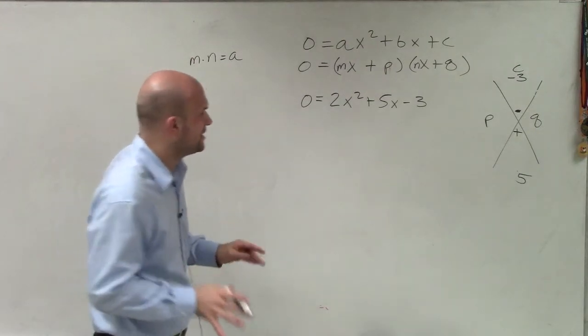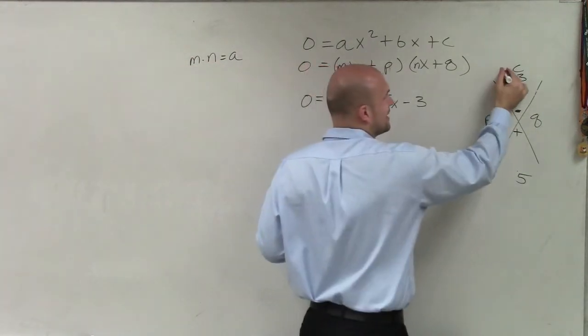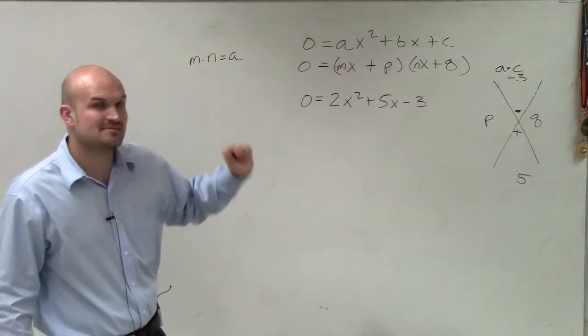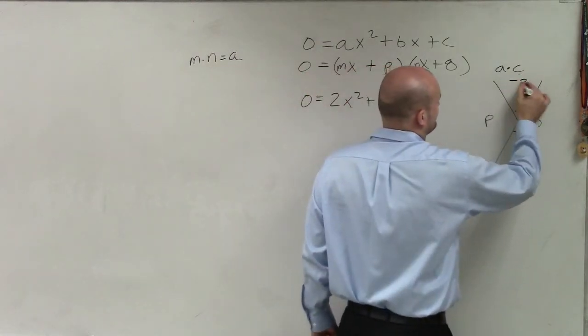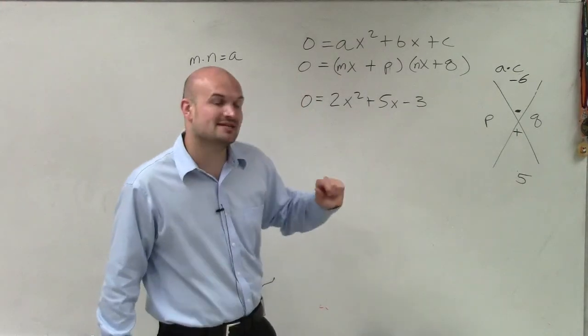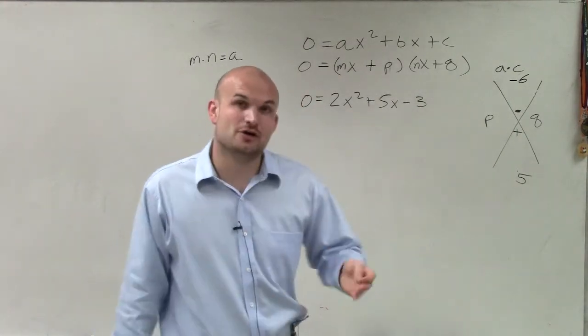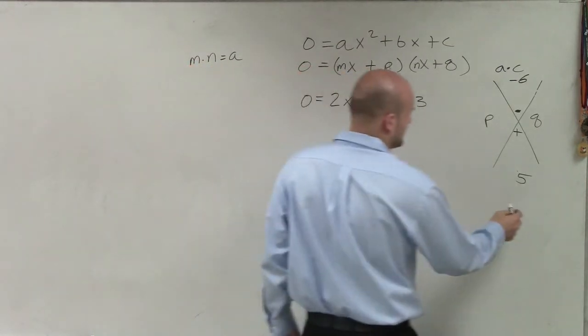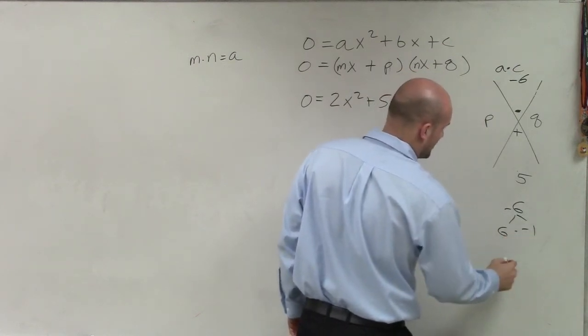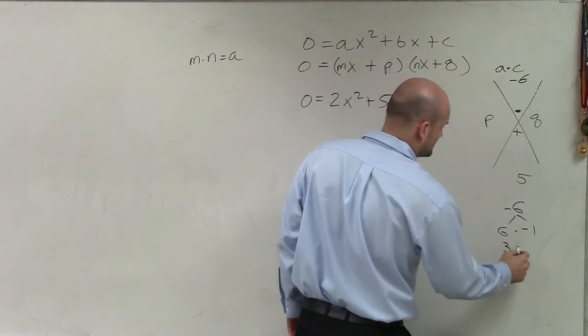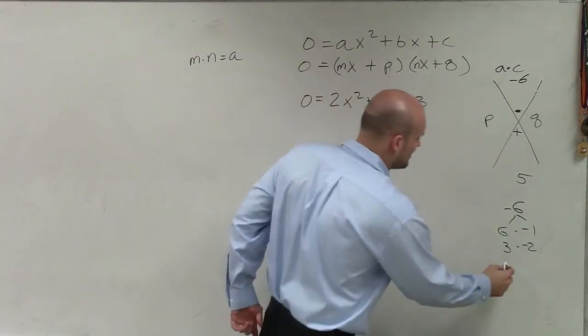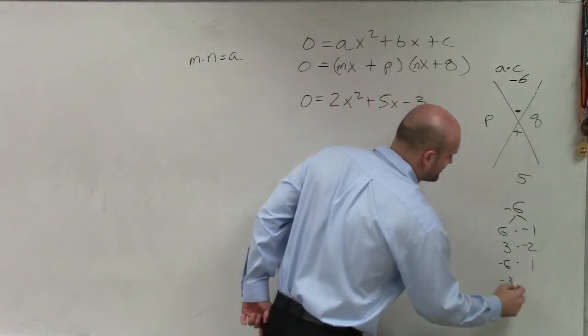So when we have this case, in this scenario, when factoring this, by using this method, I'm going to use a times c. So now what I want to do is I want to multiply 2 times negative 3, which gives me a negative 6. Now I'm looking at the factors of negative 6 that multiply to give us positive 5. And since that 5 is positive, I know that the largest of my factors also has to be positive. So I'll show you my case. So if I have negative 6, that means I could do 6 times negative 1. I could do 3 times negative 2.